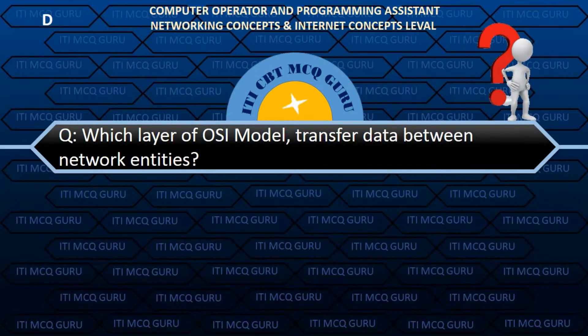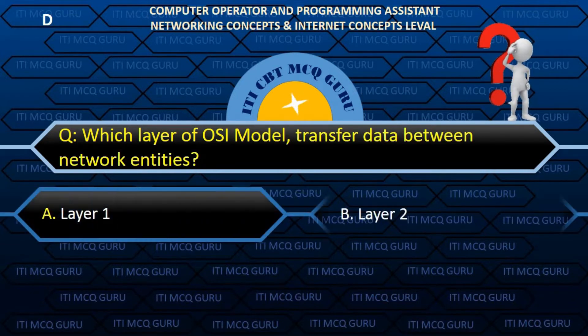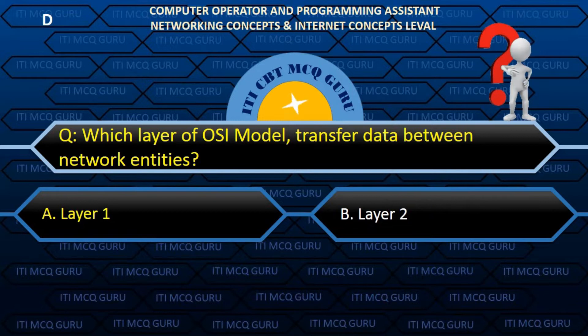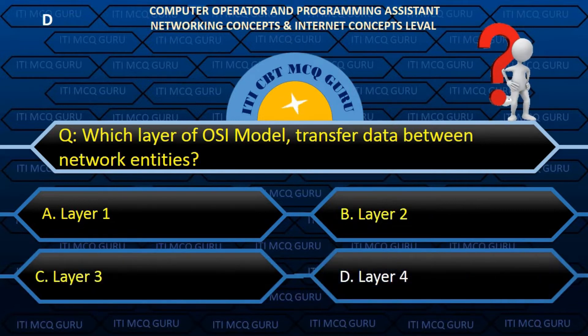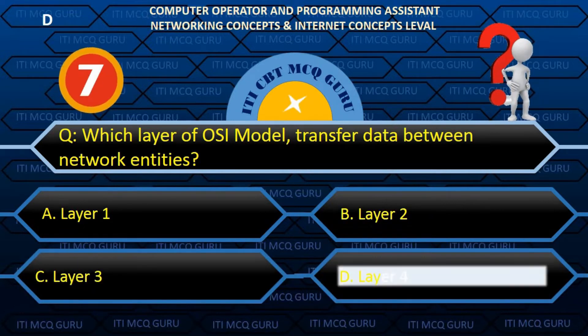Which layer of the OSI model transfers data between network entities? D. Layer 4.